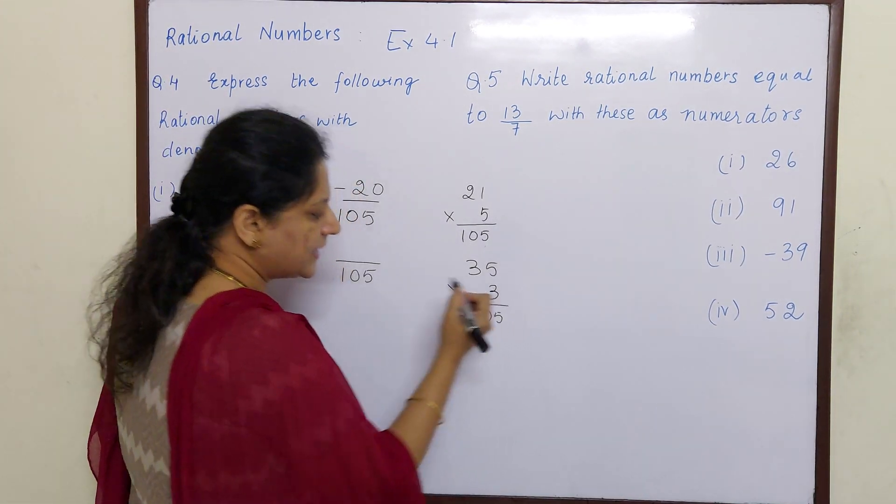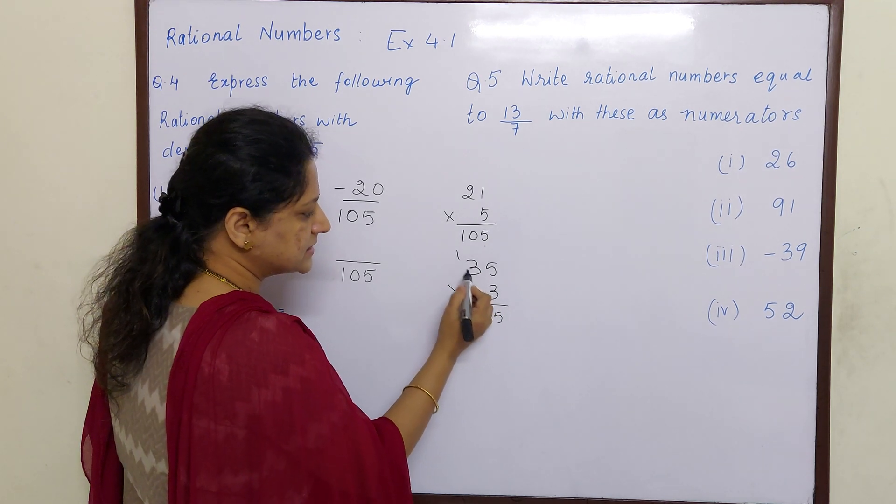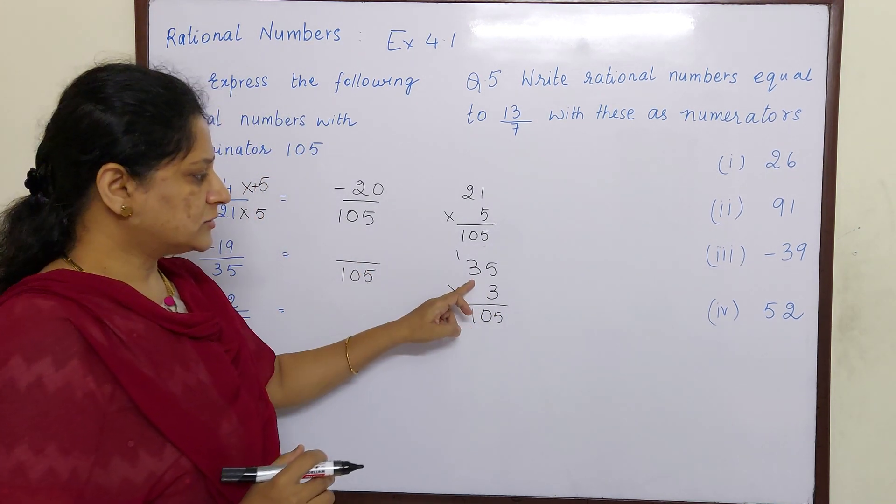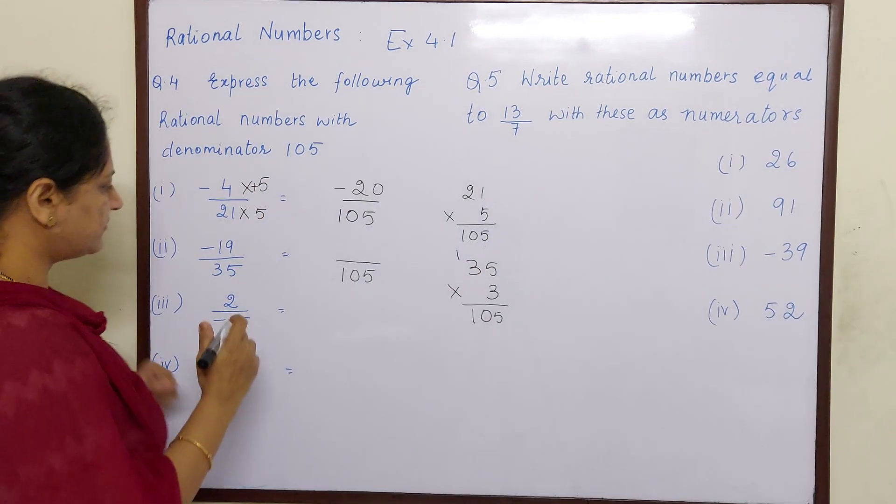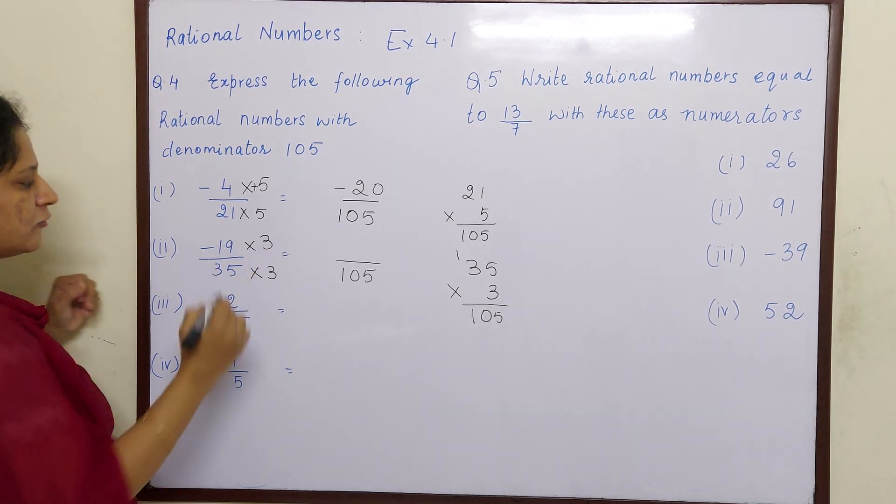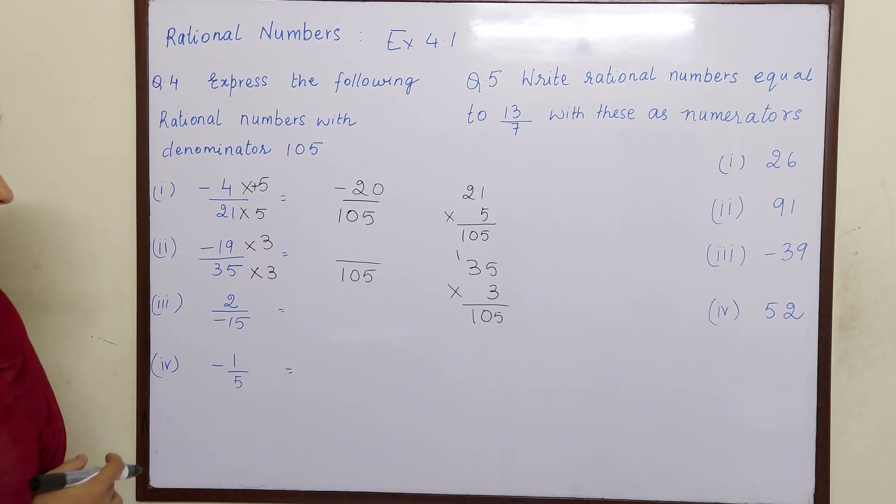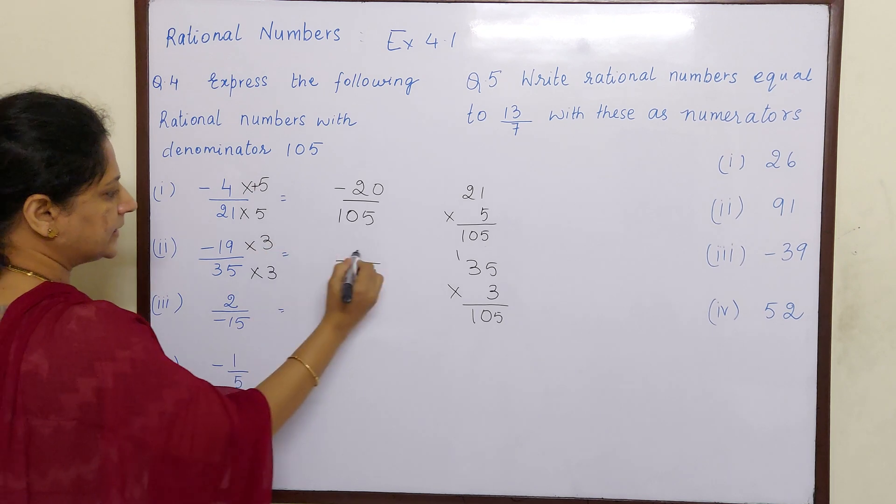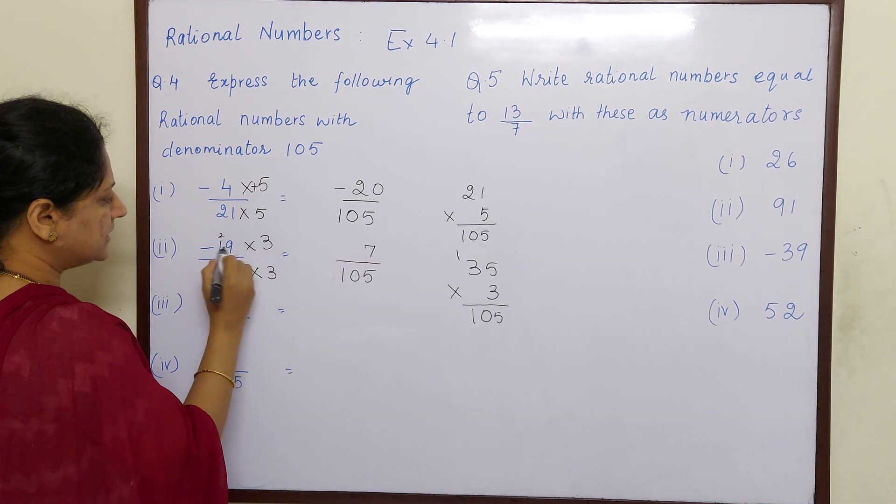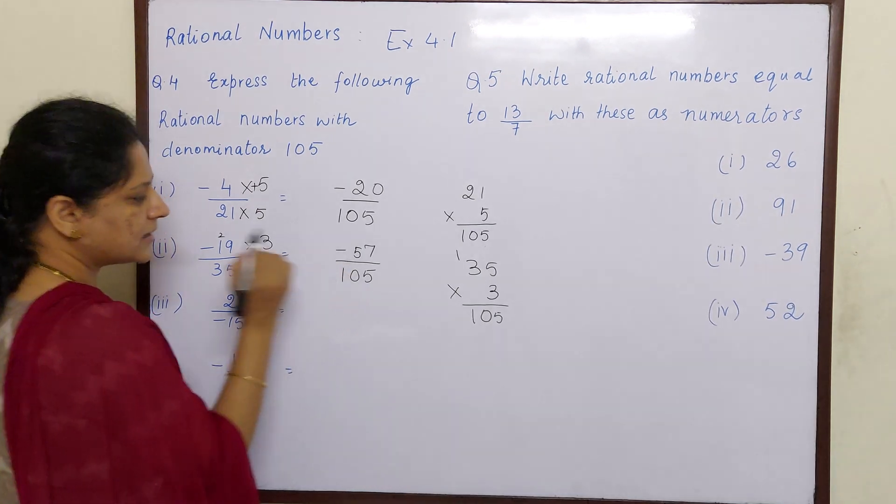Now if I multiply with 3, so 3 fives are 15, 3 threes are 9 plus 1, 10. So 35 into 3 is 105. So if I write here 35 into 3 is 105, then what is minus 19 into 3? Because the same number has to be multiplied in the numerator, so 3 nines are 27, 3 ones are 3 plus 2, 5 and minus into plus is minus.